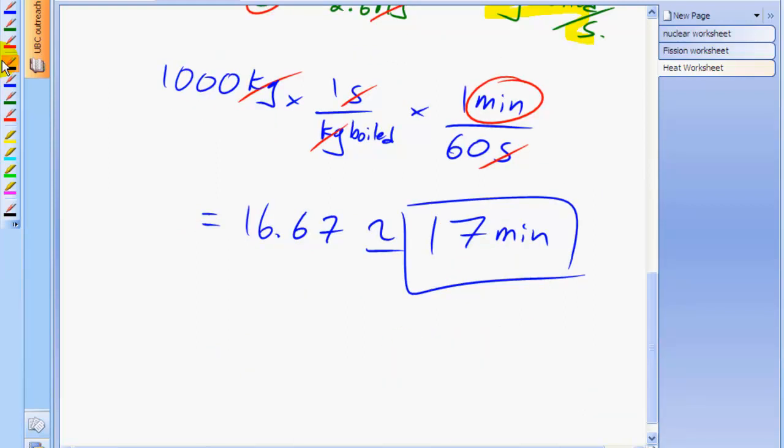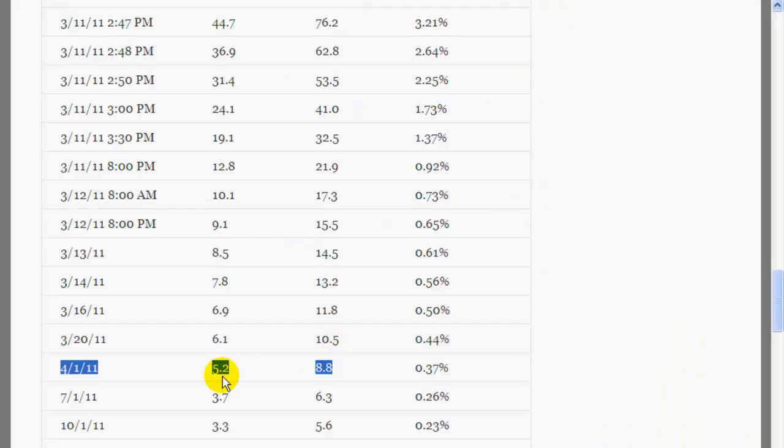Now, the real question is how quickly does the decay heat at Fukushima boil off water? Now, the best estimate we could find for the power of the decay is about 14 megawatts on April 1st.